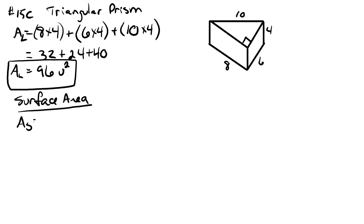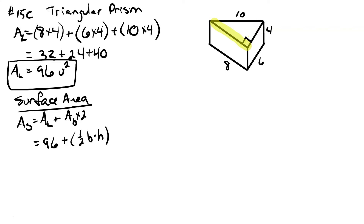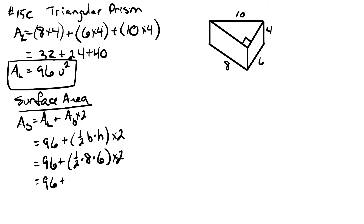Now let's look at the surface area. Surface area equals the lateral area plus the area of the base and top. The top and bottom are the same size, so we multiply the base area by two. The triangle has a base of eight and a height of six. So we've got ninety six plus one half times eight times six, multiplied by two. That's ninety six plus forty eight, so the surface area is one hundred and forty four square units.